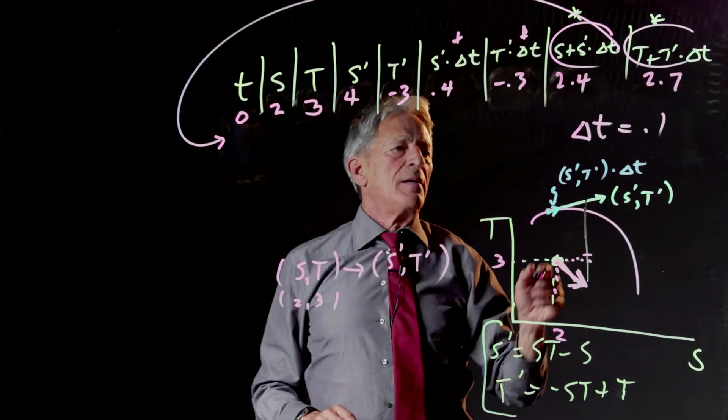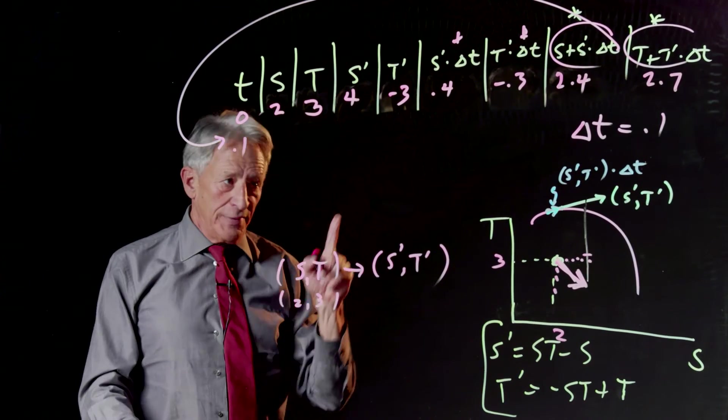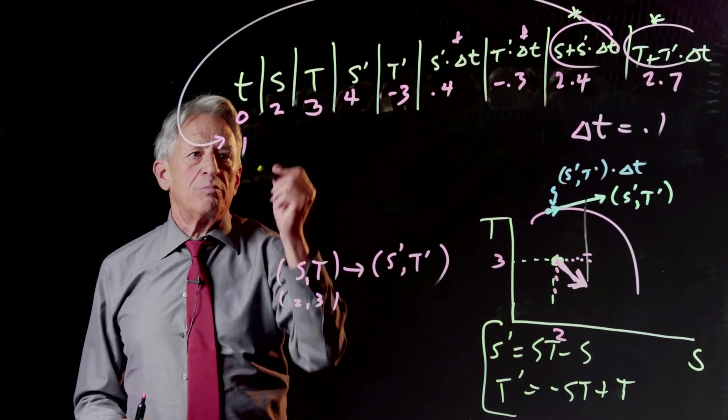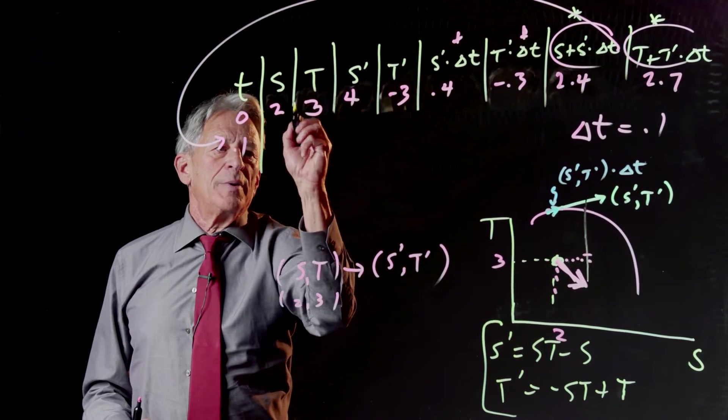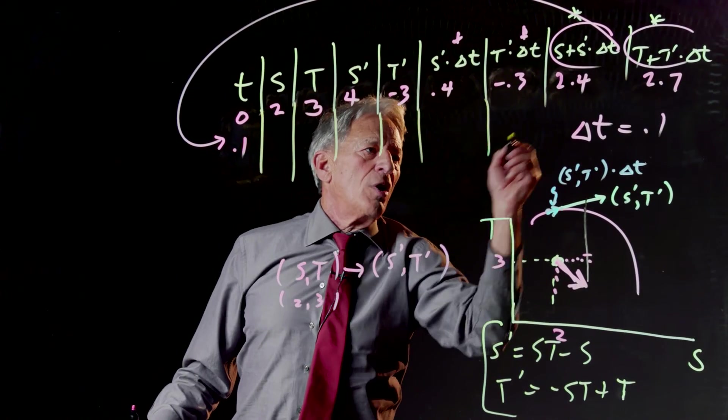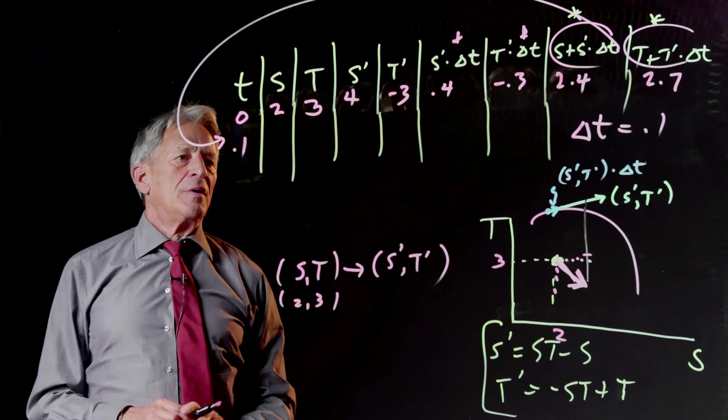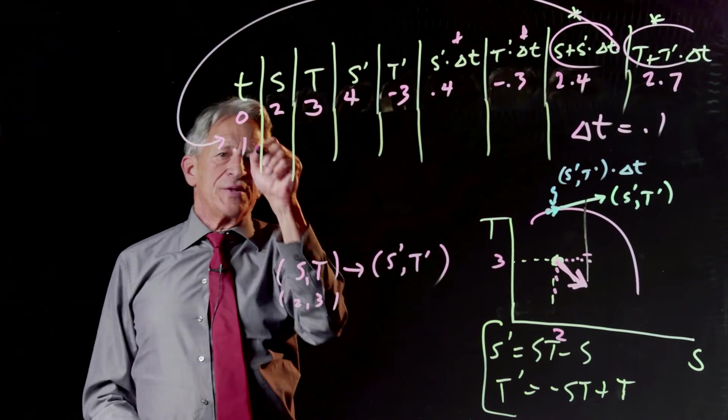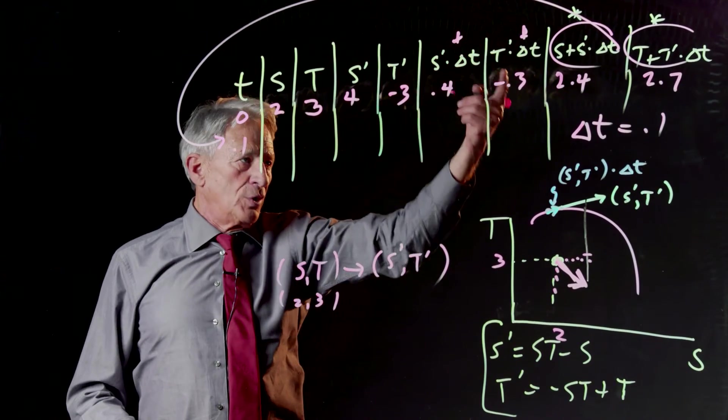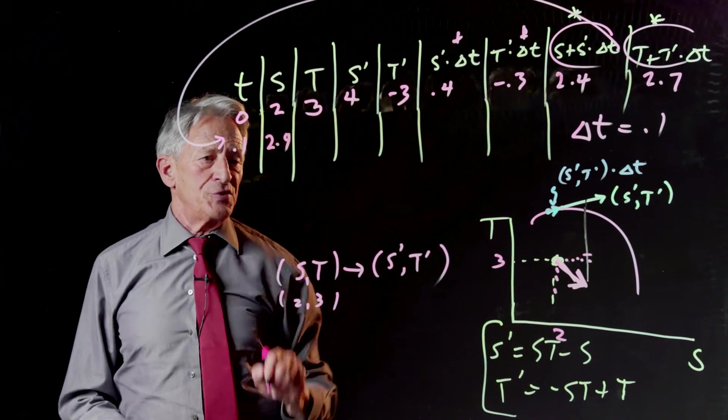And now at t equals 0.1 that is 1 delta t we now have, and we can pull our column down a little bit, for the second row which is 0.1 is now the time. The new s value is the old s plus s prime times delta t so the new s value is 2.4. The new t value is 2.7.